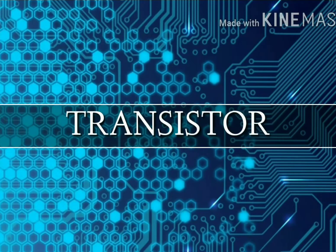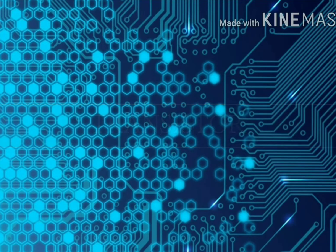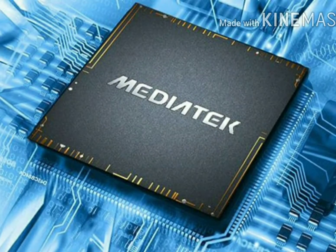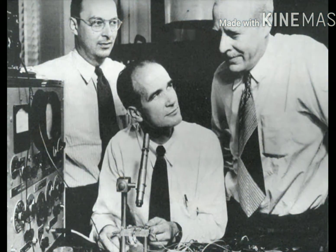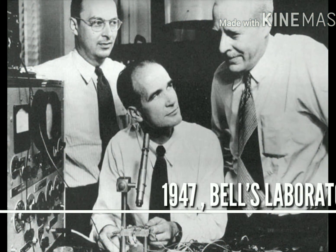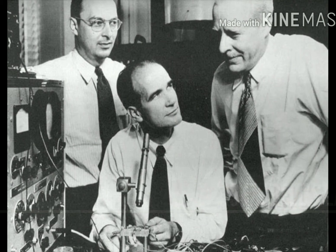Today's topic is the Transistor. From its invention, it sparked a revolution in science and technology — from our smartphones to computers, and the microprocessors inside them, all are built on transistors. It was invented in 1936 at Bell Laboratories.